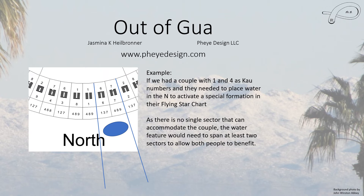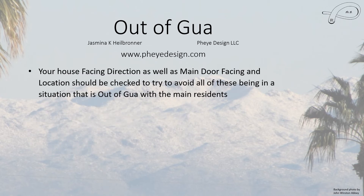Now this is something I look at when I'm analyzing your charts. If we have to add water, I want to make sure that you can actually receive the energy from that water feature. So I look at your facing direction of your house as well as the facing direction and even the location of your main door. I check that out to avoid the situation where there's negative Chi coming in, and we want to make sure that it is Out-of-Gua with the main residents. Unfortunately, sometimes it can affect some people in your house, and then of course this is the time to do Chi mitigation. I do have monthly videos discussing where and when to do the mitigation, and that mitigation lasts between six to twelve months, so you just have to keep it up.